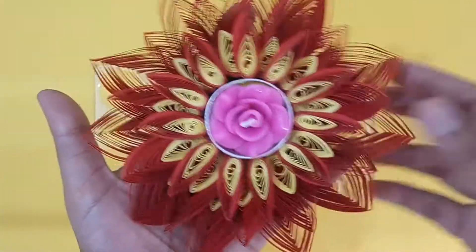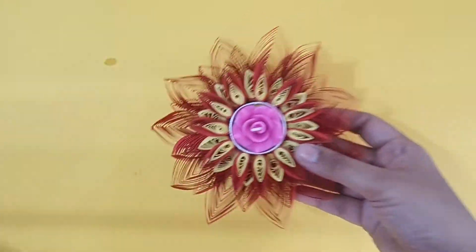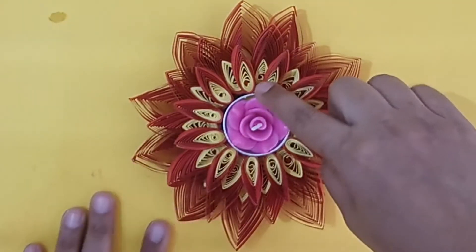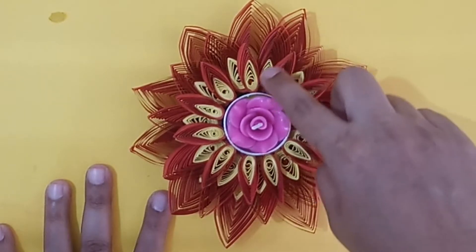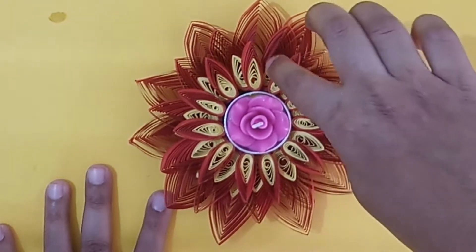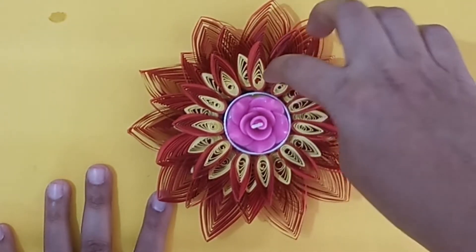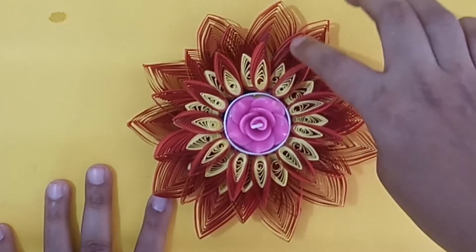If you see the flower, the center one has one rotation of red. Second has three rotations. And last big petal has four to five rotations.